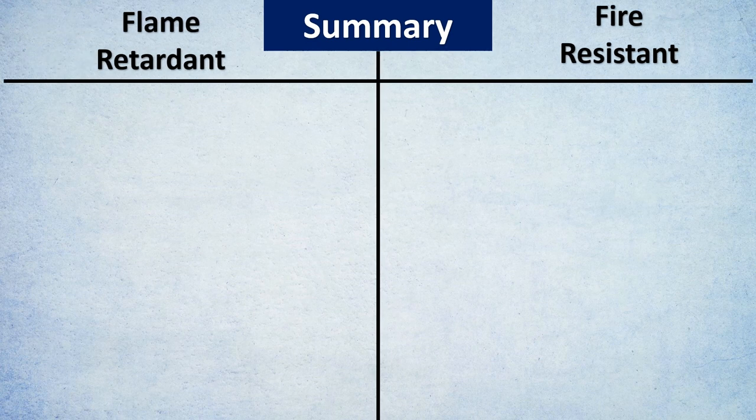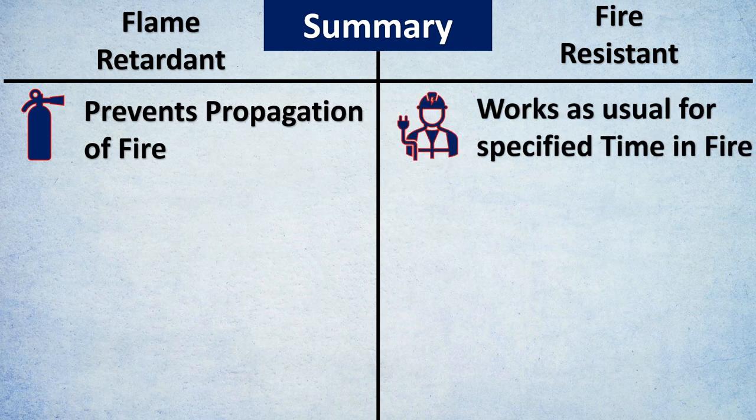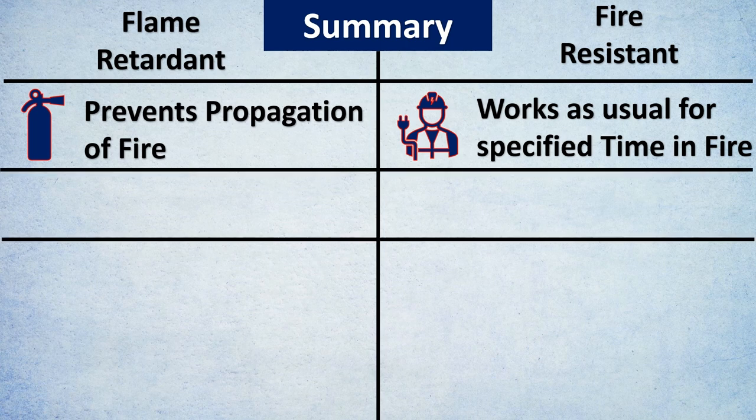In summary: flame retardant cable prevents the propagation of fire, while flame resistant cable works as usual for a specified time and temperature even under fire conditions.